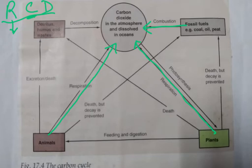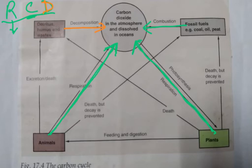Think of it as a red CD player. Then there is D — decomposition — which also returns CO2 to the atmosphere. So three arrows go back to carbon dioxide in the atmosphere. Two are for respiration: animals respire and return it to the atmosphere, and plants respire and return it to the atmosphere. Plants respire all the time.